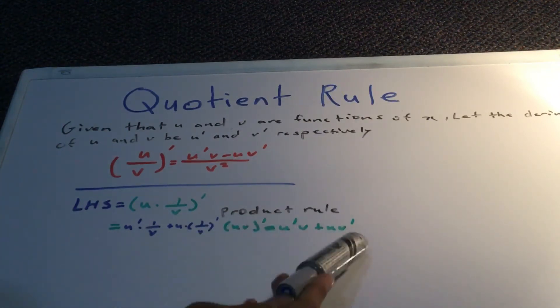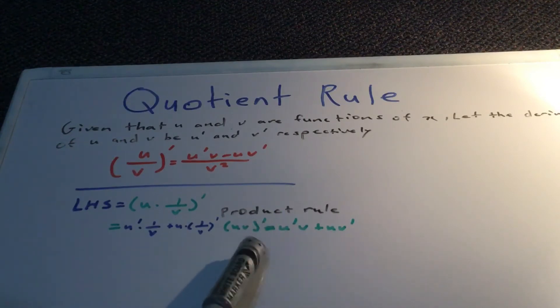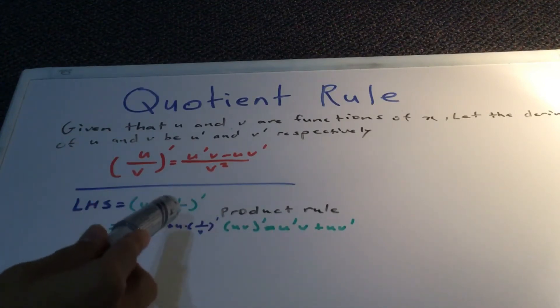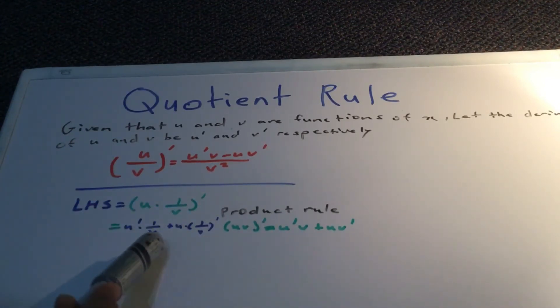The only difference with this and this is that v is represented in this case with 1 over v. That's why 1 over v is here.